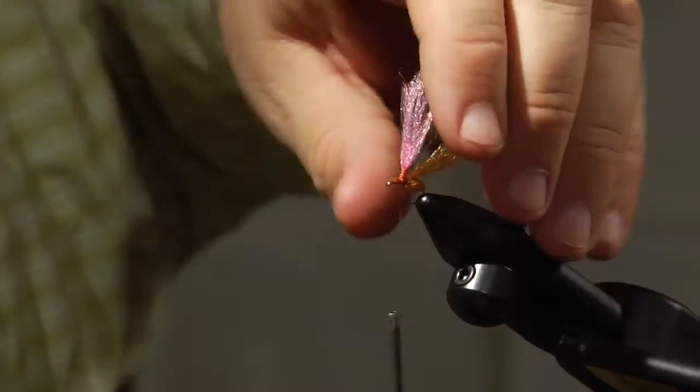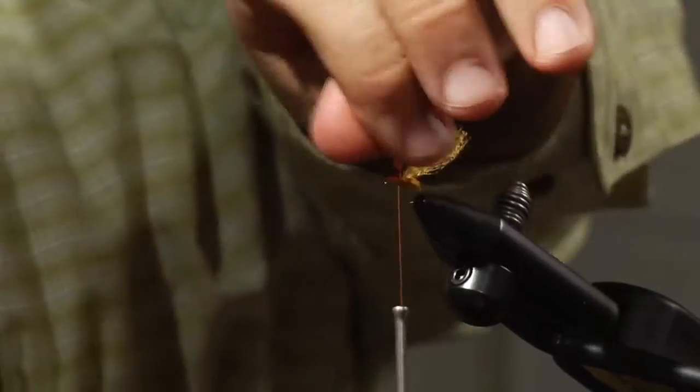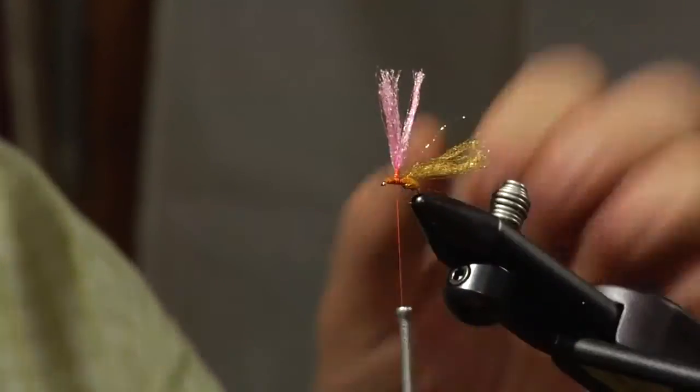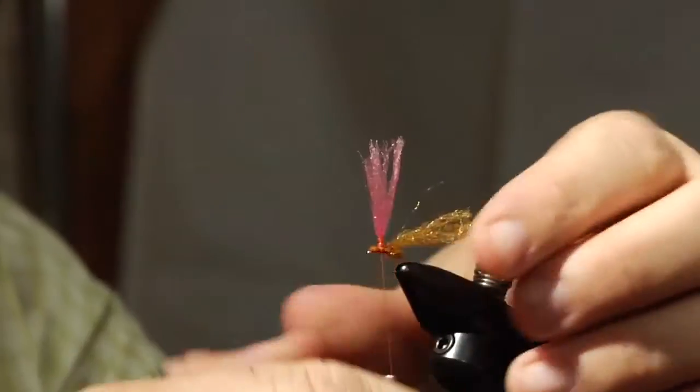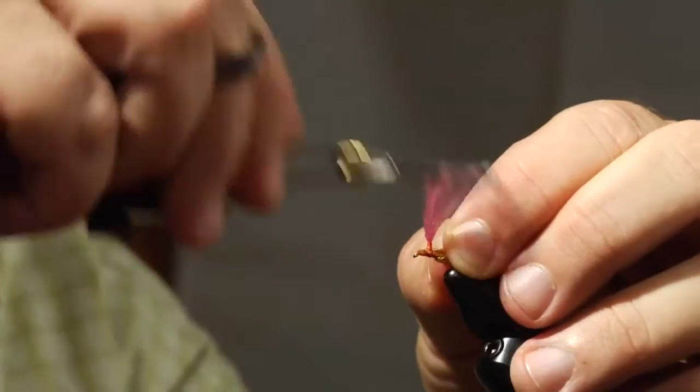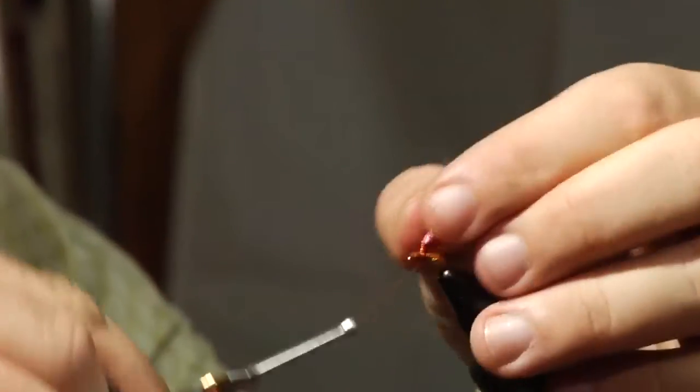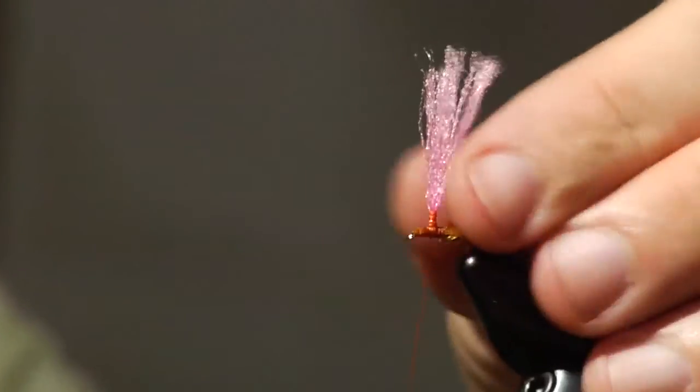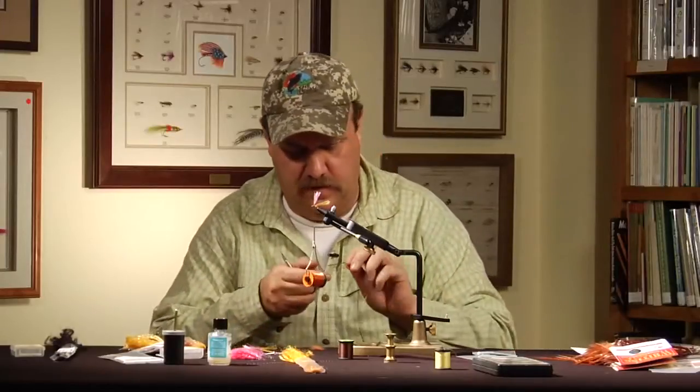Now I'm going to make sure everything is lined up with the bend of the hook and it is. I'm going to wrap behind the wing a little bit. And grab my hackle and tie that in.